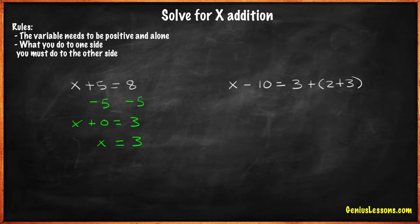We need to have the variable x alone on one side. First, we solve what's inside the parentheses. 2 plus 3 is 5. Now we can combine like terms on the right side. 3 plus 5 is 8.